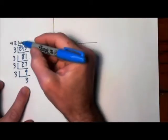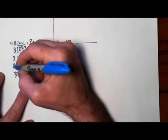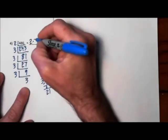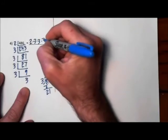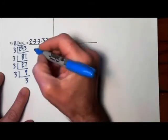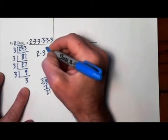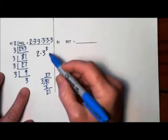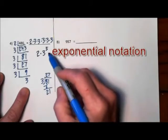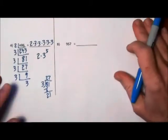The prime factorization of 486 is 2 times 3 to the fifth power. We call this exponential notation because we've written it with an exponent.